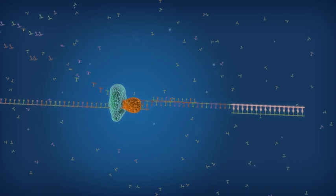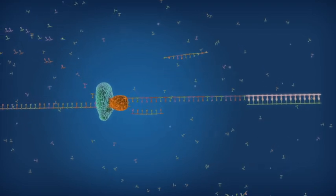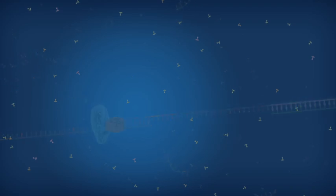First, OligoDT can't bind to non-polyA regions, for example, the ends of degraded RNA.